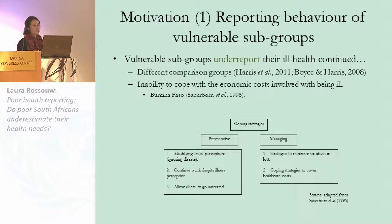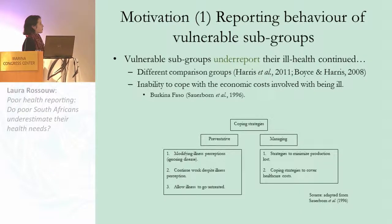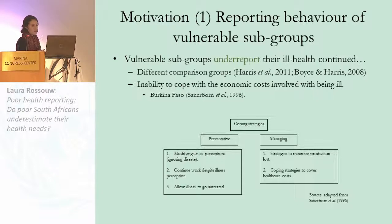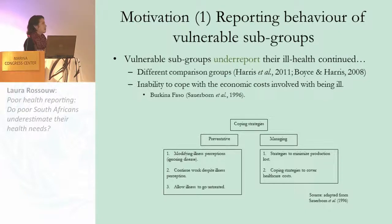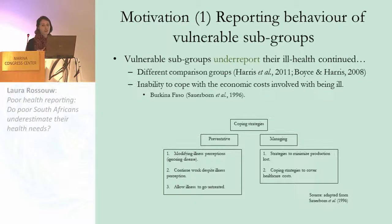Another reason, which is quite an interesting theory, is that people suppress or ignore their illnesses due to their inability to cope with the economic costs involved with being ill — both health care costs and the opportunity costs of not being able to work. Sauerborn and colleagues differentiate between two coping strategies: managing strategies, where once costs are incurred you take out a loan to deal with health costs; and the preventative strategy proposed here, where you modify your illness perception or ignore your disease, resulting in a cognitive shift in what you think your health state is.